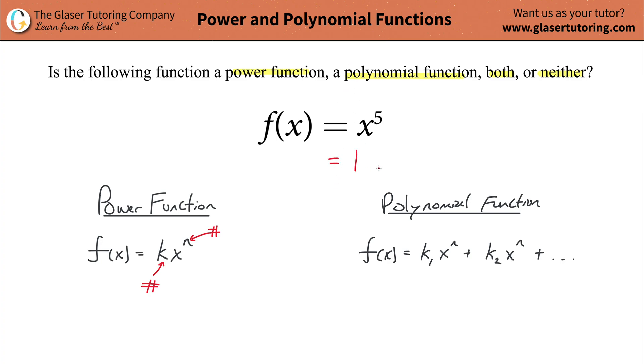we were to plug in a 1 times x to the fifth? If we plugged in a 1 there, wouldn't that be the same thing as just x to the fifth? Yeah, it would be. Therefore, the constant in the front is actually a 1. By the way, one value that the